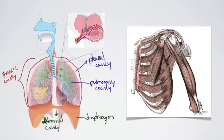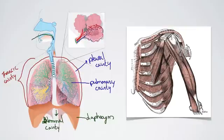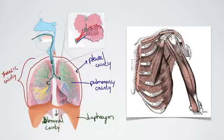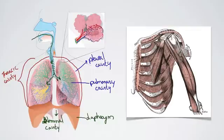As the lungs expand, you have more space inside, and that decreases the pressure in the pulmonary cavity relative to the atmosphere. That causes air to move from higher pressure to lower pressure, going into the lungs. So to review: diaphragm contracts, external intercostals contract, that expands the thoracic cavity, decreasing pressure in the pleural cavity, which causes the lungs to expand, causing a reduction in pressure in the pulmonary cavity — causing air to move from the atmosphere into the lungs. We have just accomplished breathing in.